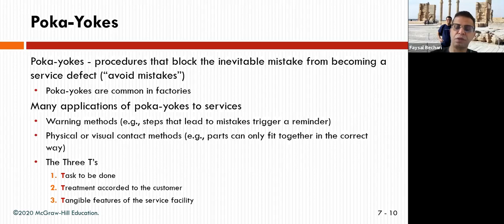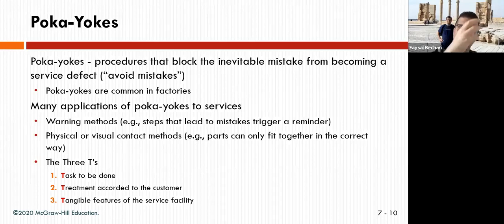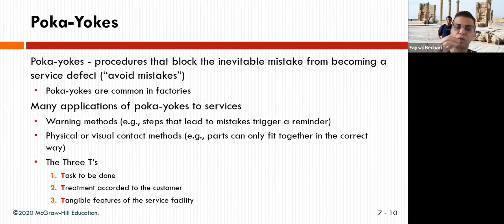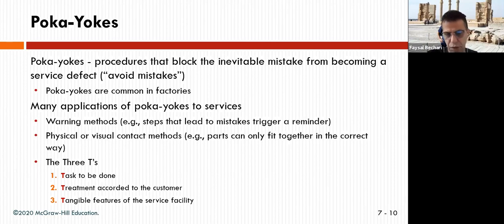There are many applications of poka-yoke to services: warning methods, steps that lead to a mistake trigger, benchmarking, and physical or visual contact methods. The three ways of doing it — the 3T's of poka-yoke — are: tasks to be done, treatment according to the customer, and tangible features of the service.